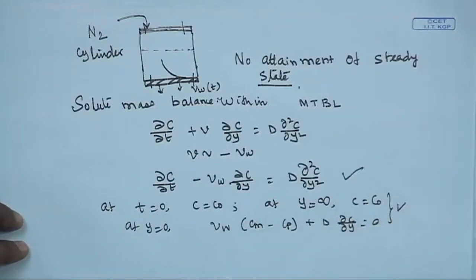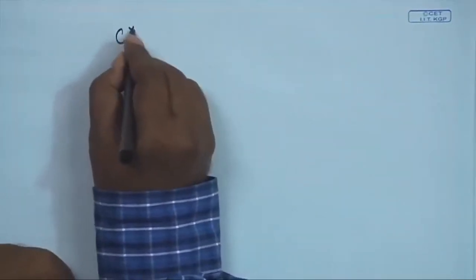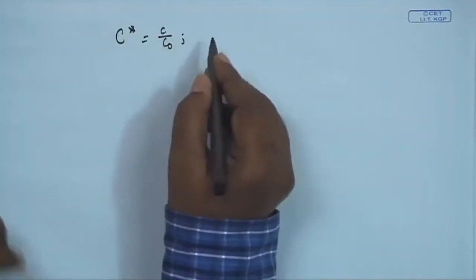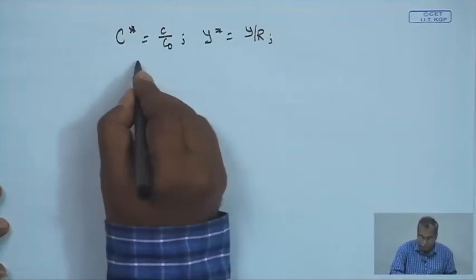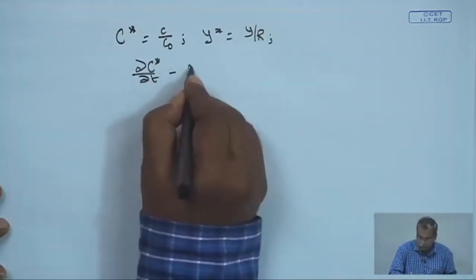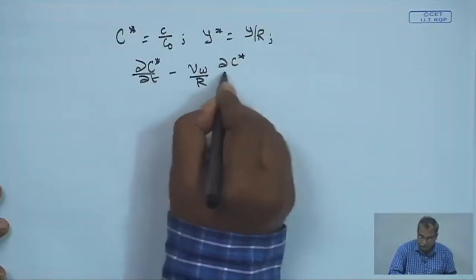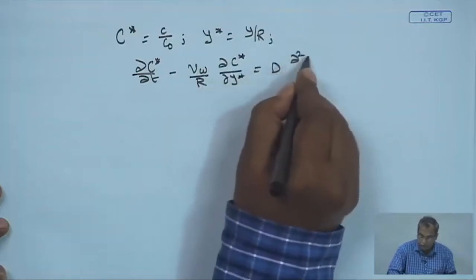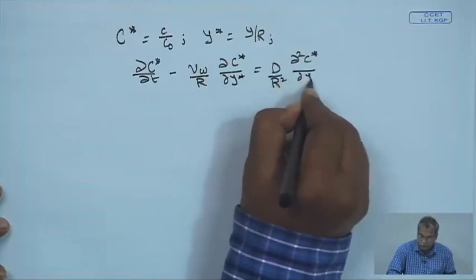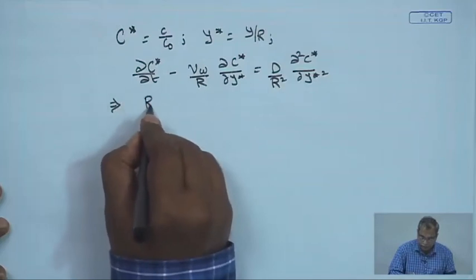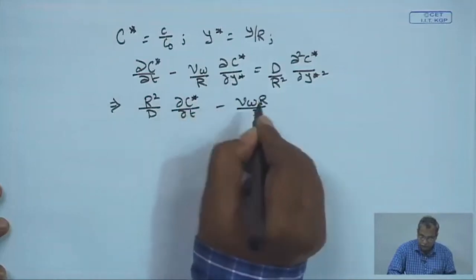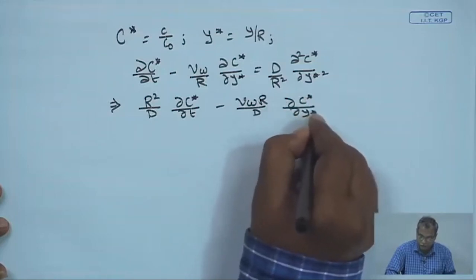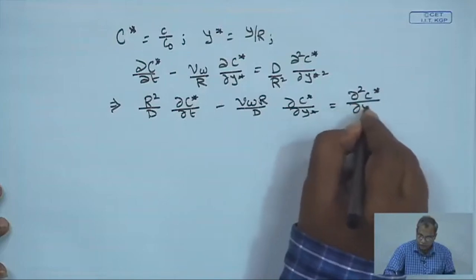This sets up the governing equation and the three boundary conditions. Next, we make the system non-dimensional. We define: c* = c/c₀, y* = y/r, where r is the radius of the batch cell. The governing equation becomes: (r²/D)·(∂c*/∂t) − Vw·(r/D)·(∂c*/∂y*) = ∂²c*/∂y*². Multiplying through by r²/D: (r²/D)·(∂c*/∂t) − Pw·(∂c*/∂y*) = ∂²c*/∂y*², where Pw = Vw·r/D is the non-dimensional permeate flux.